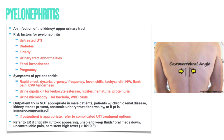Pyelonephritis is an infection of the kidney and upper urinary tract. Risk factors include an untreated UTI, diabetes, elderly age, urinary tract abnormalities, fecal incontinence, and pregnancy. Symptoms include rapid onset of dysuria, urgency, frequency, fever, chills, tachycardia, nausea, vomiting, flank pain, and CVA tenderness. Urine may be positive for leukocyte esterase, nitrites, hematuria, proteinuria, bacteria, and white blood cell casts.